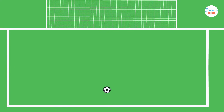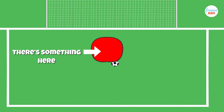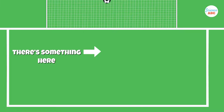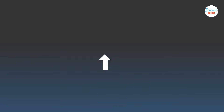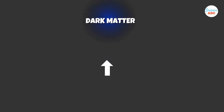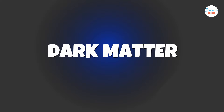Although you can't see anything, you know that something is in the way. This is an oversimplified version of how the existence of dark matter was initially proposed nearly 90 years ago.